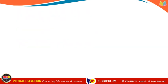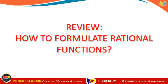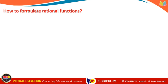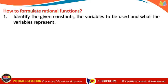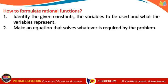Let's now have our review on how to formulate rational functions. Going directly to the steps: first, identify the given constants, the variables to be used, and what the variables represent. If no variable is given, we assign one ourselves. Next, make an equation that solves whatever is required by the problem.